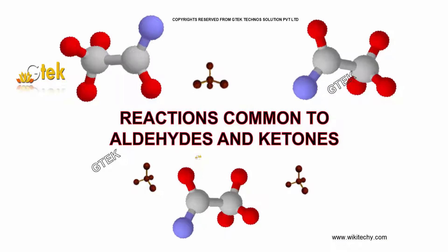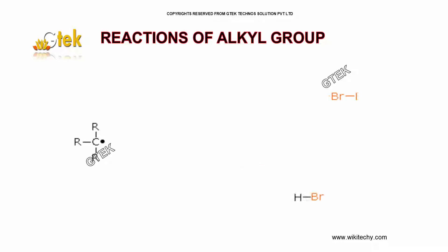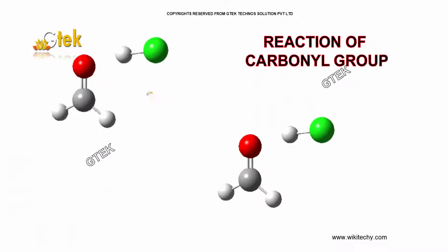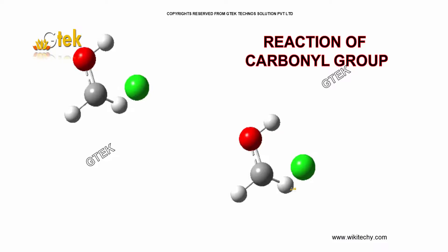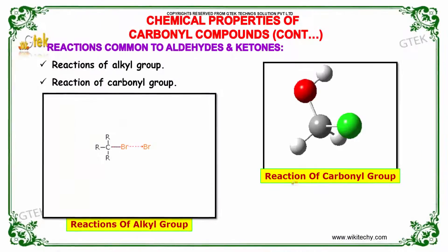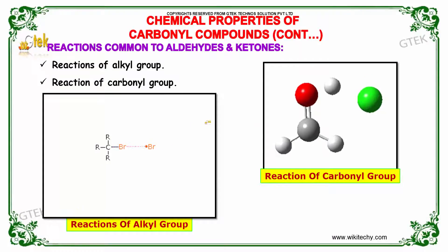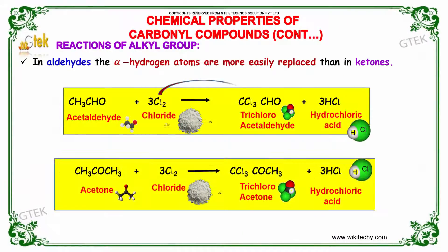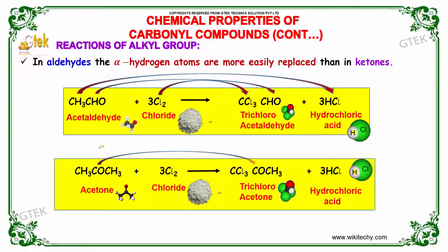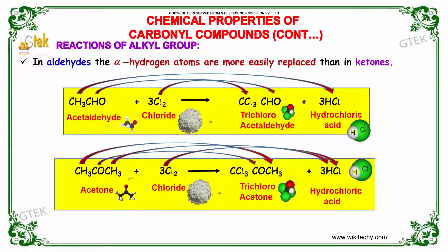Reactions common to aldehydes and ketones include reactions of the alkyl groups and reactions of the carbonyl group. In aldehydes, the alpha hydrogen atoms are more easily replaced than in ketones. When acetaldehyde reacts with chlorine, the chlorine atom replaces this hydrogen to form trichloroacetaldehyde along with hydrochloric acid. Whereas when acetone reacts, it replaces all three hydrogens to form trichloroacetone and hydrochloric acid.